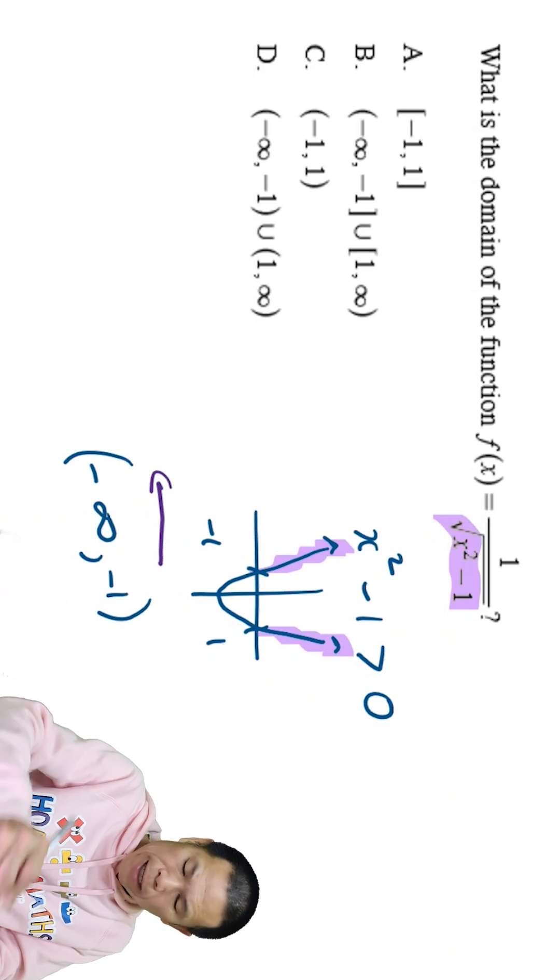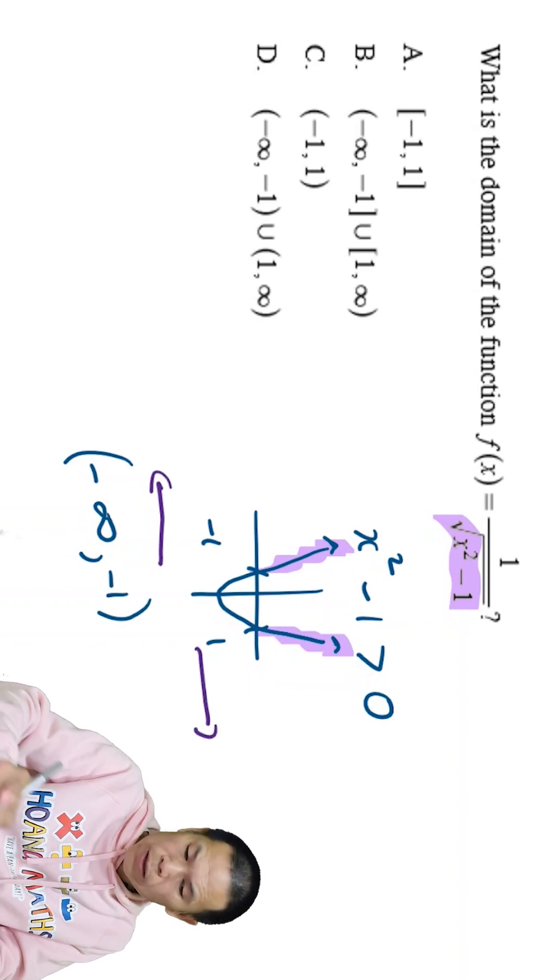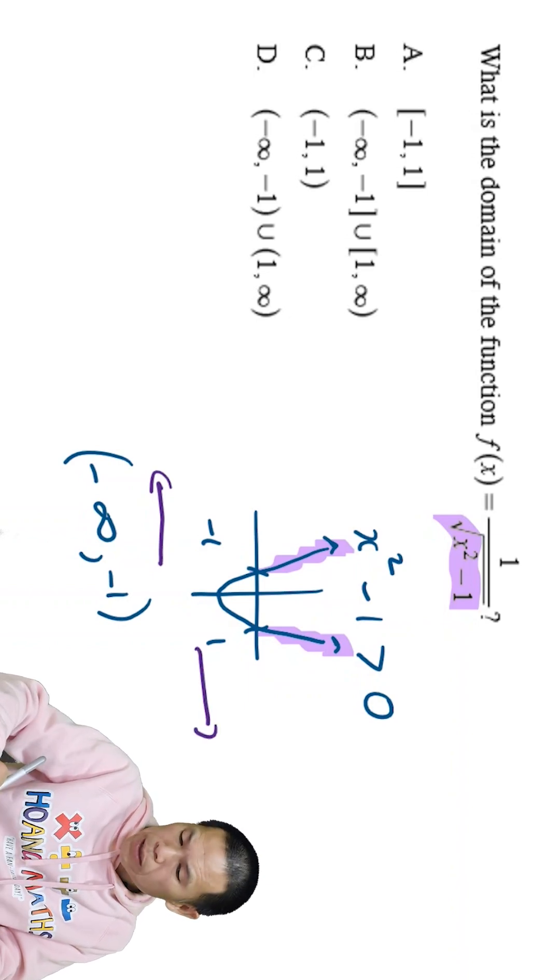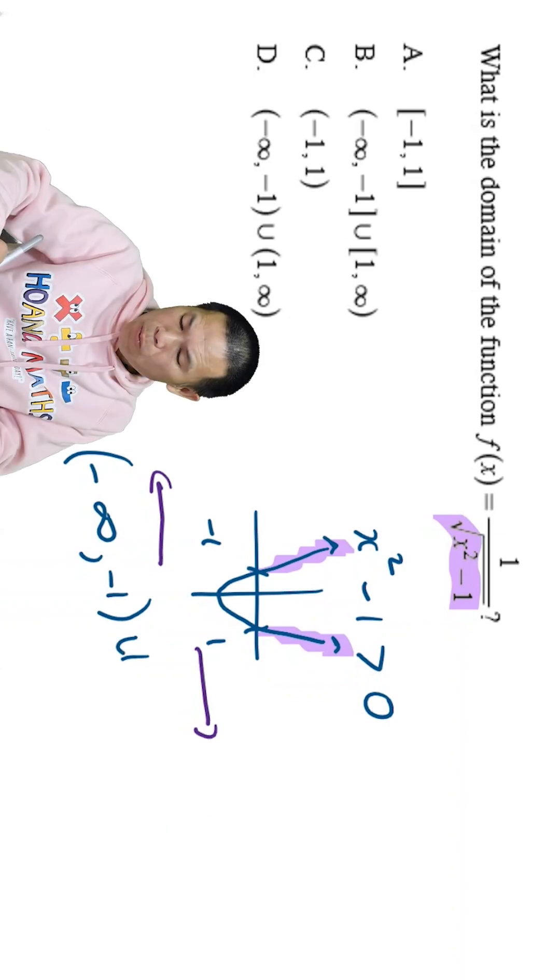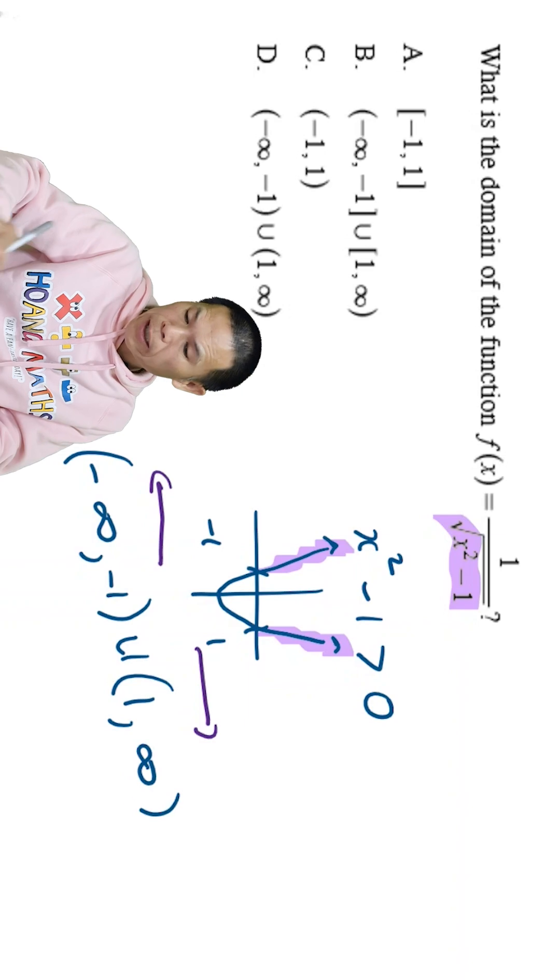And this part here is from 1 onward. So that means union from 1 to infinity and excluding.